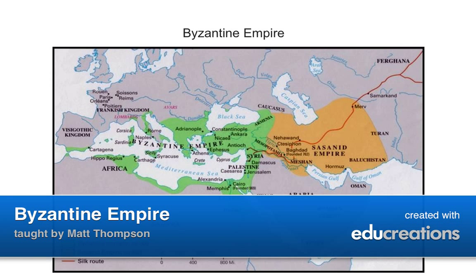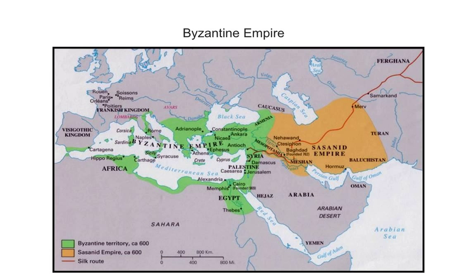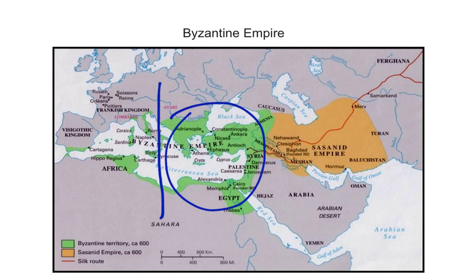Today we're going to take a look at the Byzantine Empire in a little more depth. Start out by taking your notebook out and you can add to the notes you've taken for today. As I've mentioned before, the Byzantine Empire was really the old Roman Empire. It was divided into east and west in 395, and the eastern portion really considered itself to be the Roman Empire.